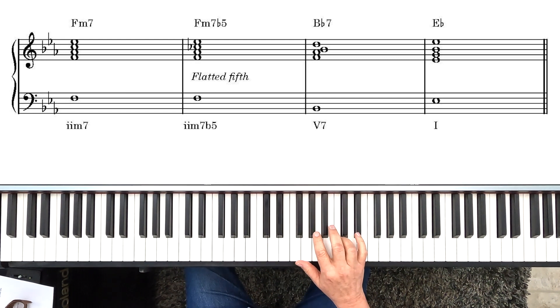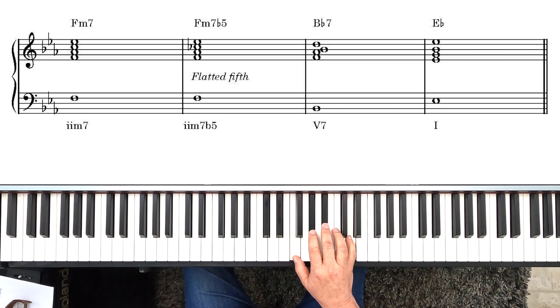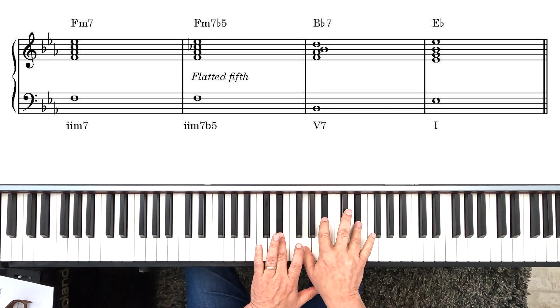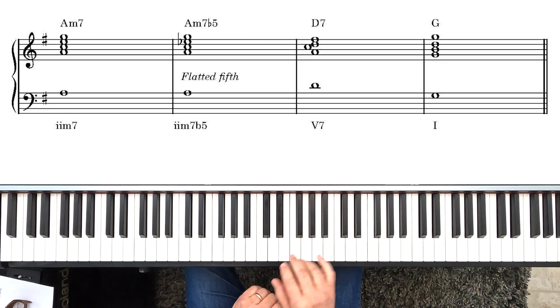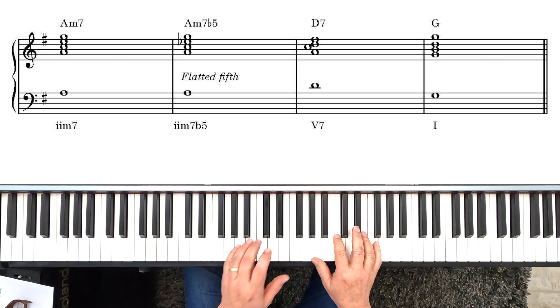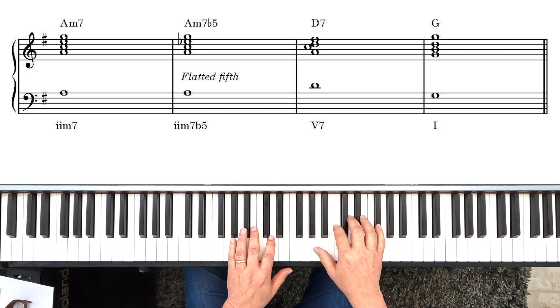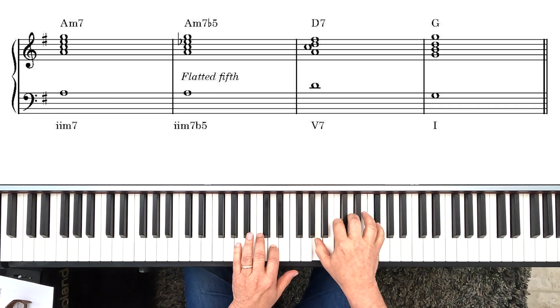Also in the key of E flat, this would be the II7, which is a minor 7th chord. We can alter it by lowering the 5th. And that naturally leads us to this V7 chord or just the plain V chord, and then that leads us back to E flat. In the key of G, it would look like this. And then that leads you to the D7 chord, back to G.